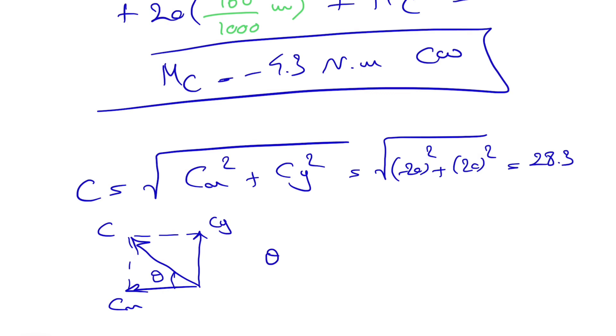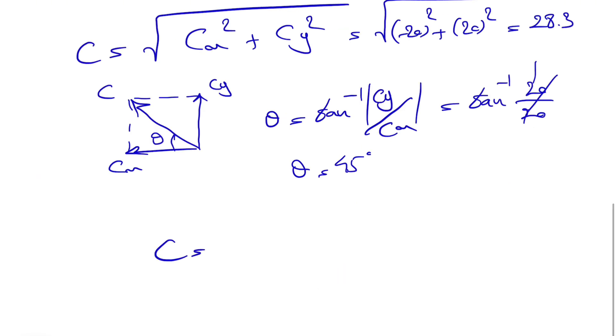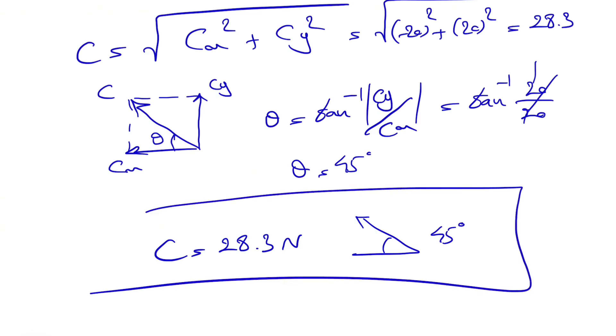Then we'll be able to see theta would be tangent inverse CY over CX. Again, we can just put absolute numbers for these two numbers since the direction already counted for the negative sign and everything. So this will be tangent inverse of 20 over 20, which is 1, and we know that theta will be 45 degrees. So the final answer for C will be 28.3 Newton, and the direction would be what we have in here, 45 degrees. That would be the final answer for this question.